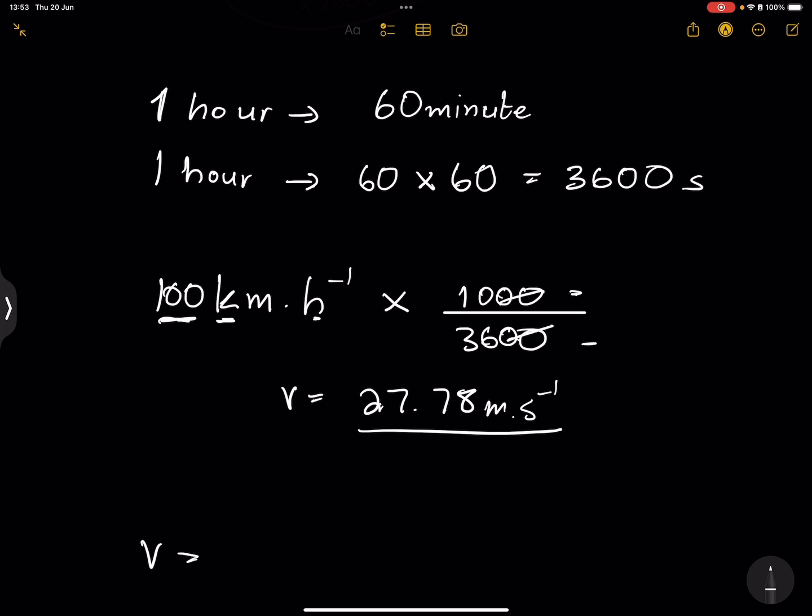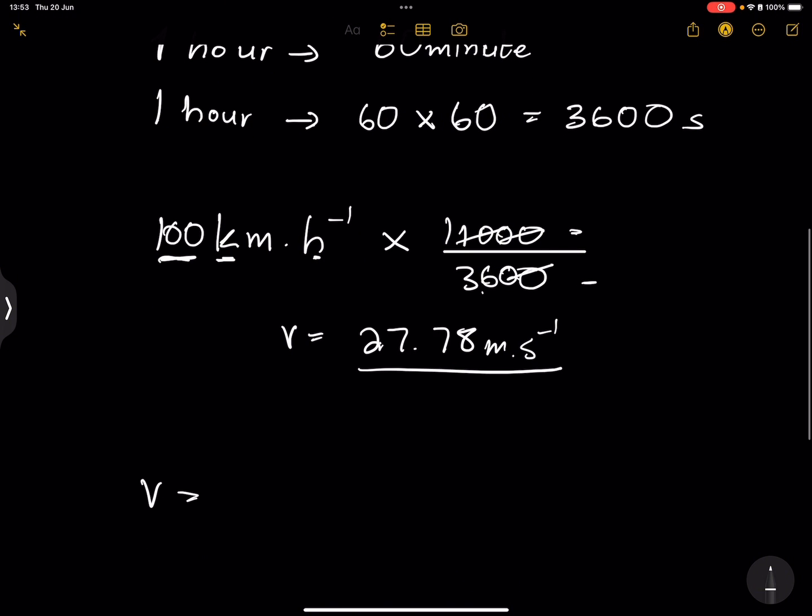In this case, 10 into itself once, and into 36, it goes 3.6 times. And so that's why we can actually divide by 3.6. So you could have said, well, 100 kilometers per hour, divide by 3.6.